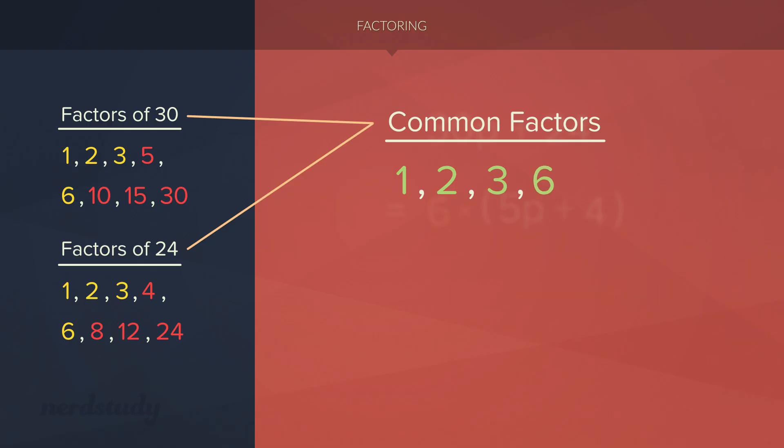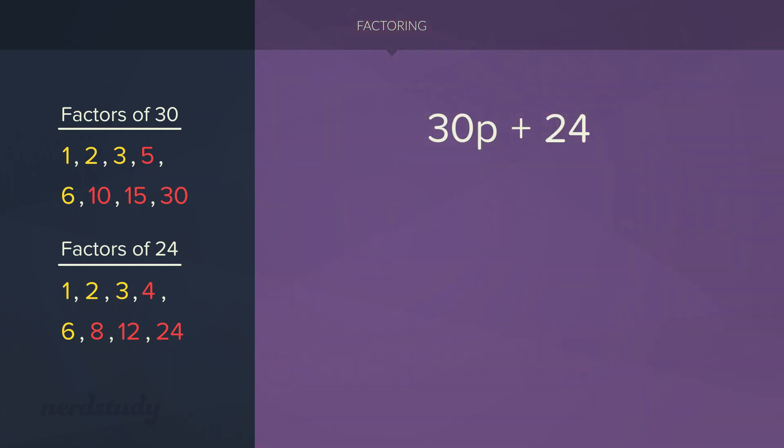Of course, somebody might ask you to do something much more specific. For example, what if somebody wanted us to factor out a 2? First of all, we know that this is possible because 2 is a common factor. So let's start with our original expression, which is 30p plus 24. Now we know that 30 divided by 2 is 15. So I'm going to rewrite 30p as 2 times 15p. We know that 24 divided by 2 is 12. So I'm going to rewrite 24 as 2 times 12. So we literally rewrote every single term with a multiplication of 2 in it, meaning that we can just factor out the 2. What we would get is 2 times bracket 15p plus 12.